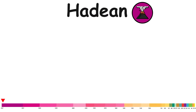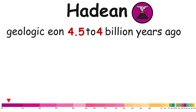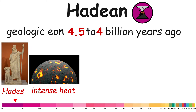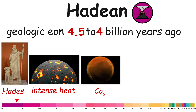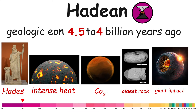Hadean. The Hadean is a geologic eon that represents the earliest period in Earth's history, extending from about 4.5 billion years ago to around 4 billion years ago. The eon's name comes from Hades, the Greek god of the underworld. It is characterized by intense heat and an atmosphere mostly of CO2. During this period, the protolith of the oldest known rock formed, and the Moon probably formed from a giant impact.